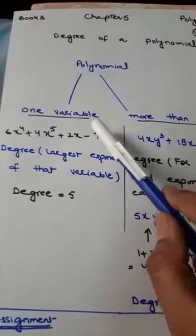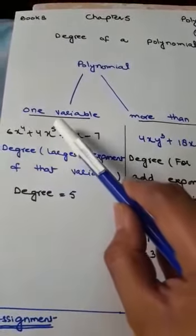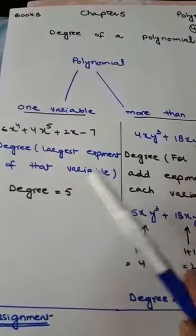Among all these 0, 1, 5, 4, the highest exponent is 5, that's why the degree is 5.